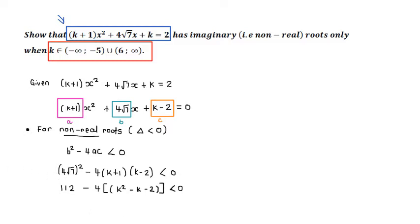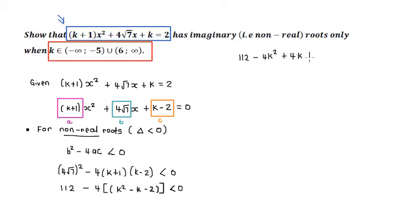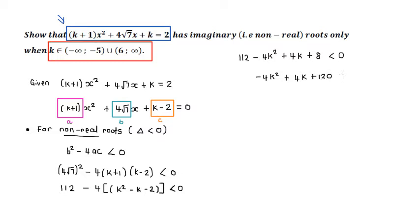Now distribute the negative 4 into the bracket. Carrying on, what we now have is 112 minus 4K squared plus 4K plus 8, still less than zero. Collecting like terms — the only like terms are the two constants — so we have minus 4K squared plus 4K, and 112 plus 8 gives 120, so plus 120, still less than zero.